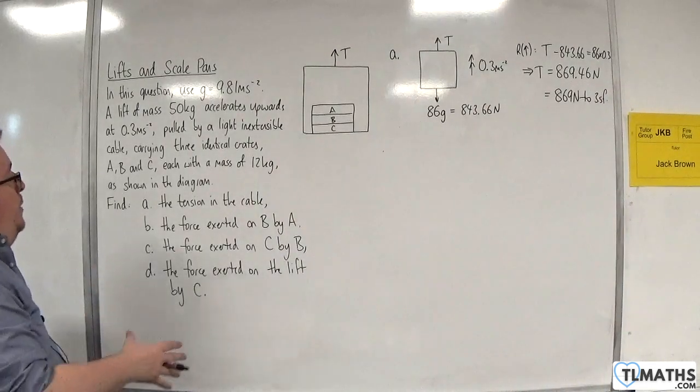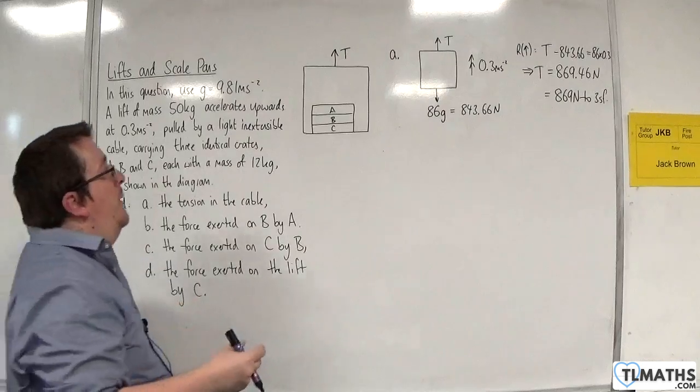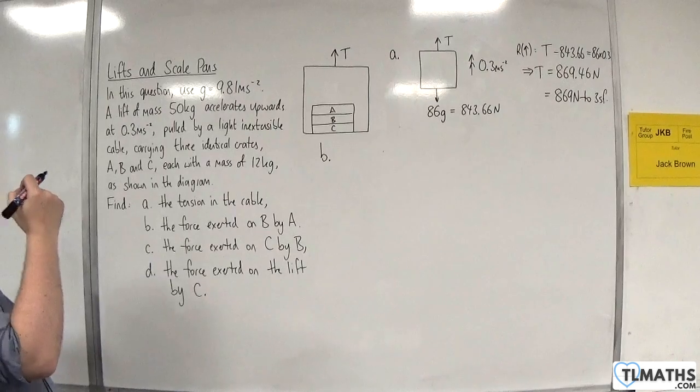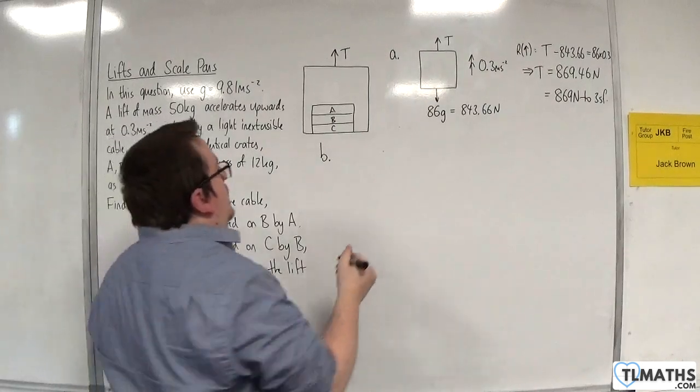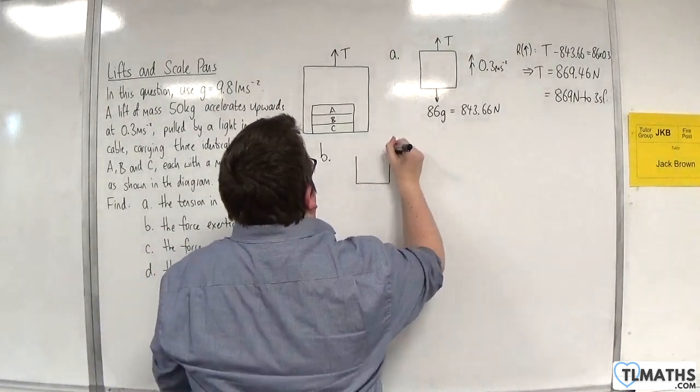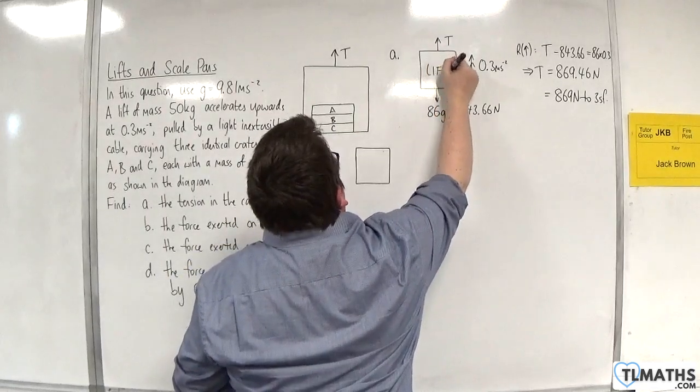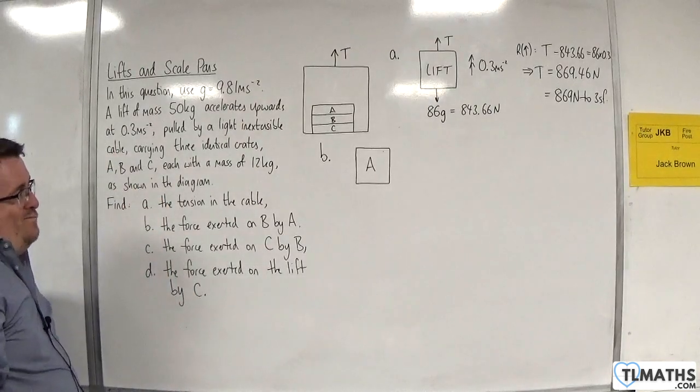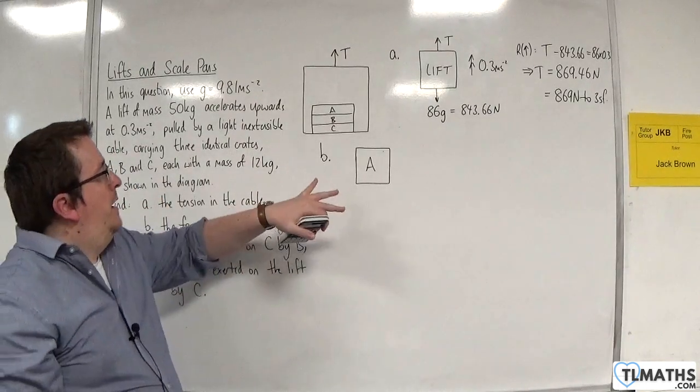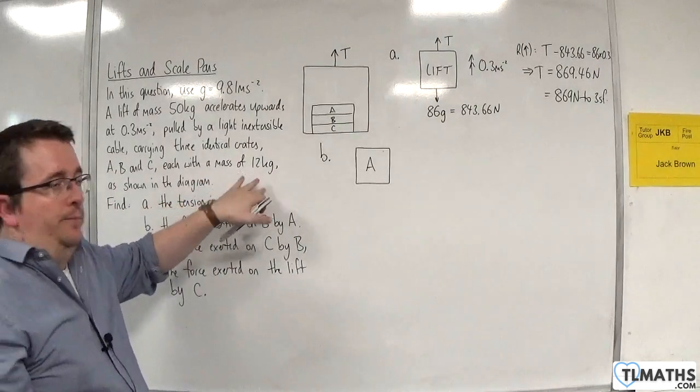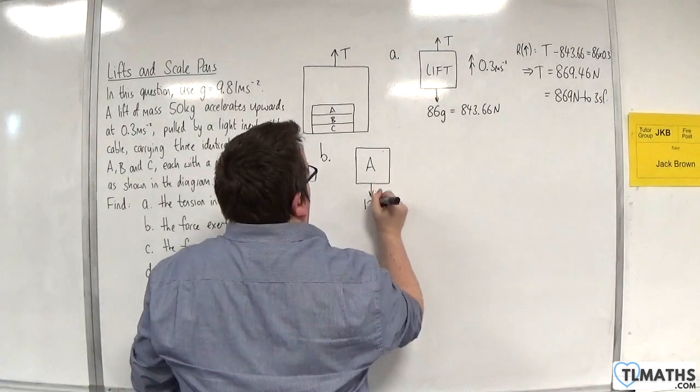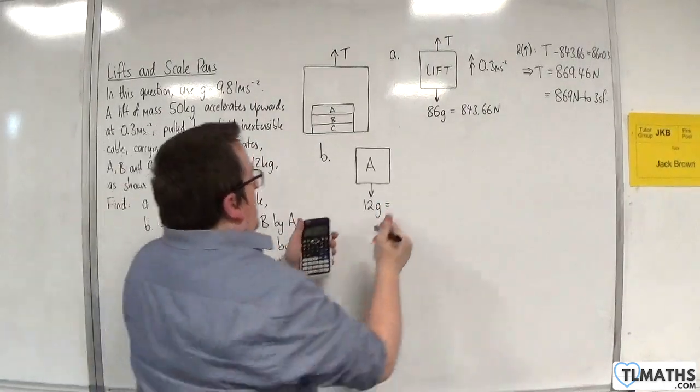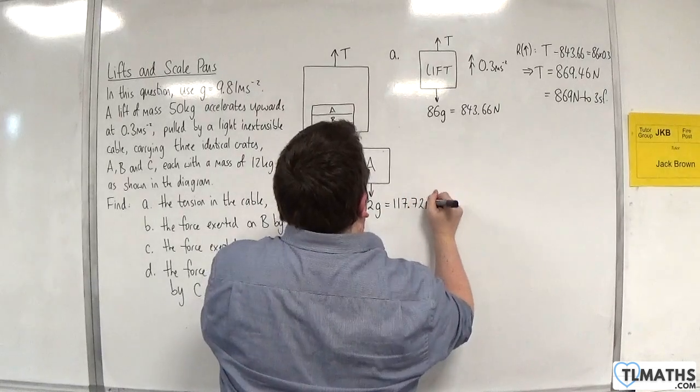Now, for part B, we want to find the force exerted on B by A. So for that, I'm just going to focus on particle A, or crate A. So let's just imagine this is crate A. This was the lift, and now we've just got A. Now A has a mass of 12 kilos, so it's going to have a weight of 12g. So 12 lots of 9.81 is 117.72 newtons.